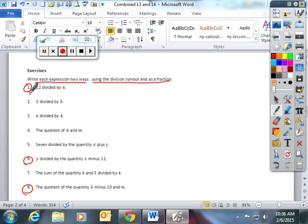The first one, 12 divided by 4. This is 12 divided by 4 with the division symbol, or you can write it as a fraction, 12 divided by 4.